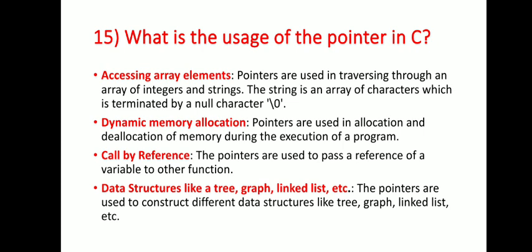Next question: what is the usage of pointers in C? Pointers are used for accessing array elements — they are used in traversing through an array of integers and strings. A string is an array of characters terminated by a null character. Pointers are used in dynamic memory allocation and deallocation during the execution of a program. Pointers are used to pass a reference of a variable to other functions. Pointers are also used to construct data structures like trees, graphs, and linked lists.